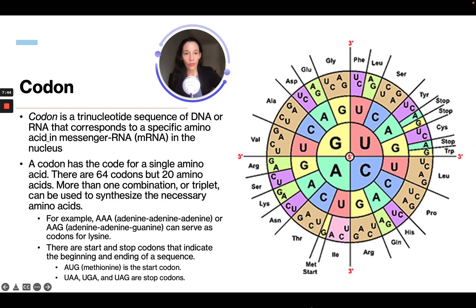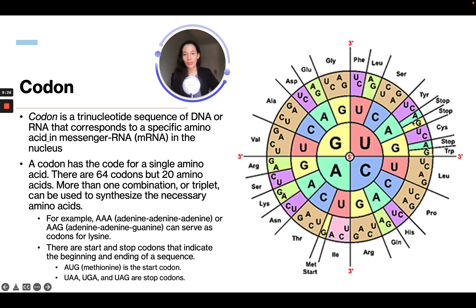Looking at this codon circle, the different letters represent the different nucleotides. Because it is a tri-nucleotide sequence, you have one nucleotide, then two, then three — and each position can be any one of the bases. The circle shows all the different codons and which protein or amino acid each codes for, including whether it is a start or stop codon. You don't need to memorize this — just know what a codon is, that it can start and stop a sequence, and that it codes for different proteins.